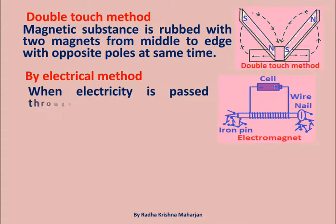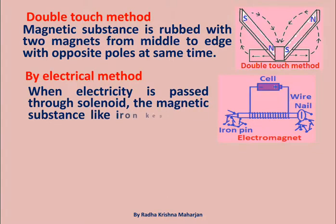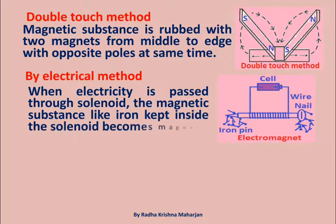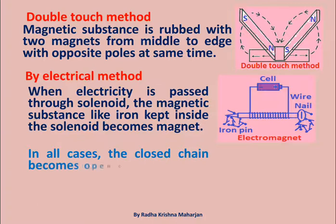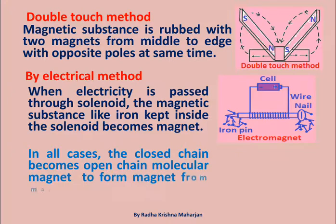In the electrical method, when electricity is passed through a solenoid, the magnetic substance like iron kept inside the solenoid becomes a magnet. In all cases, the closed chain of molecular magnets becomes an open chain to form a magnet from the magnetic substance.